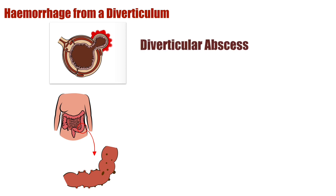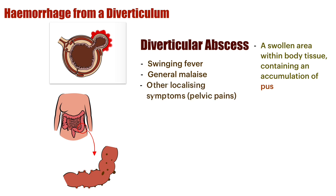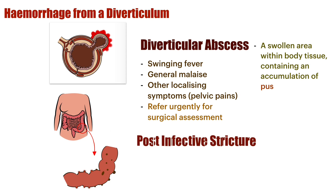Next is a diverticular abscess. An abscess is when one of these pouches becomes very swollen and inflamed and starts to accumulate pus. It presents with a swinging fever, general malaise, and localizing symptoms such as pelvic pain. This is something that needs to be referred urgently for surgical assessment and may be a consideration for surgery.